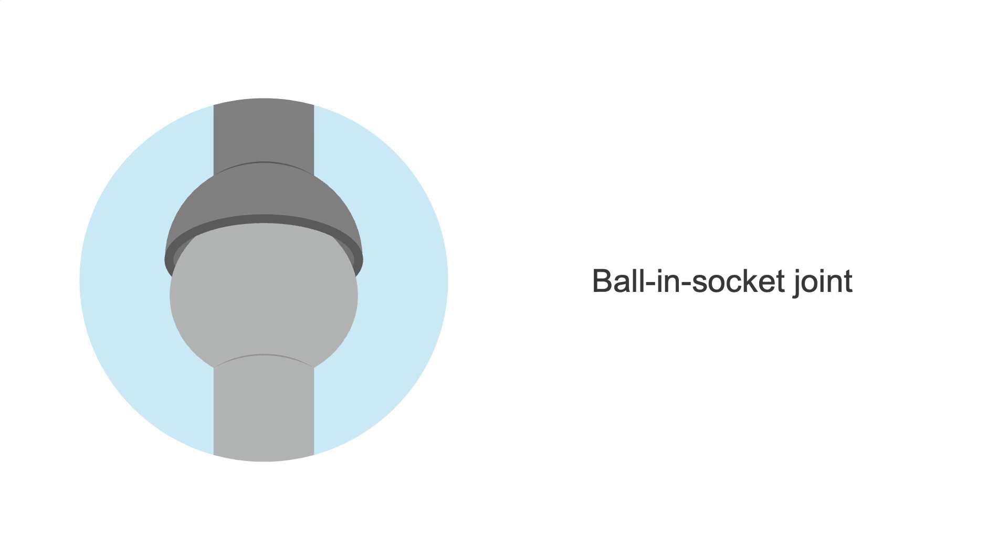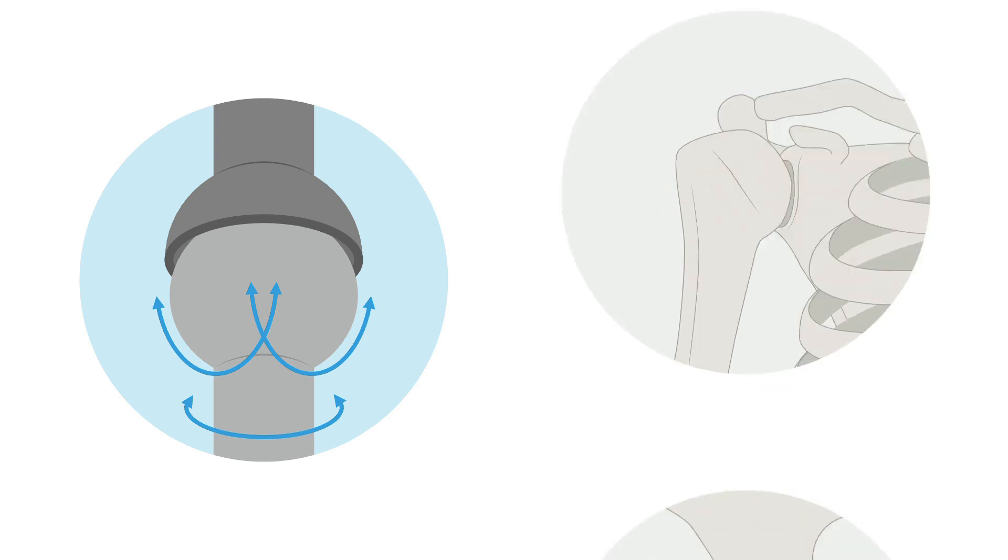In contrast, a ball-in-socket joint can not only be moved in flexion and extension, but also in abduction, adduction, and rotation. Examples include the shoulder or the hip.